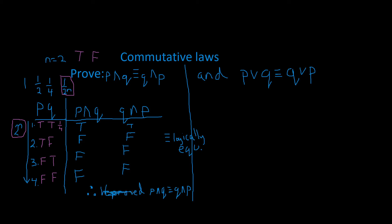You could have probably written: 'thus, P and Q are logically equivalent to Q and P.' It just depends on your professor and how they want it thoroughly written up. Now I'm going to do this next one a little faster. This is going to be P and Q — we have two variable statements, that's 2 squared which gives us four.